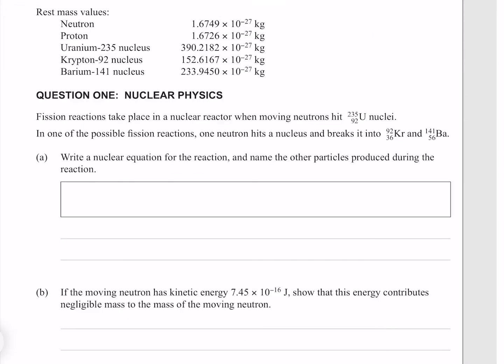Question 1. Fission reactions take place in a nuclear reactor when moving neutrons hit uranium nuclei. In one of the possible fission reactions, one neutron hits a nucleus and breaks it into krypton and barium.